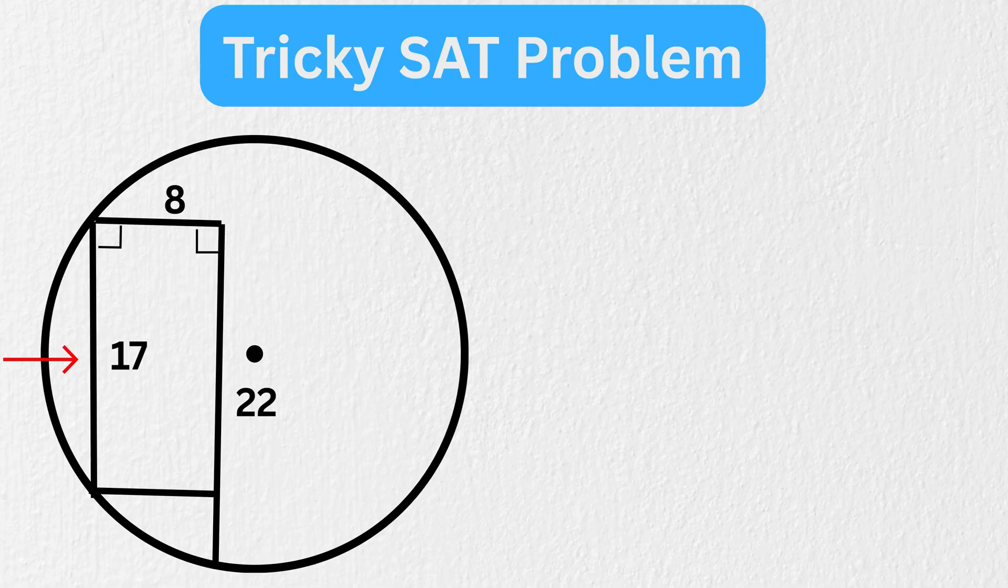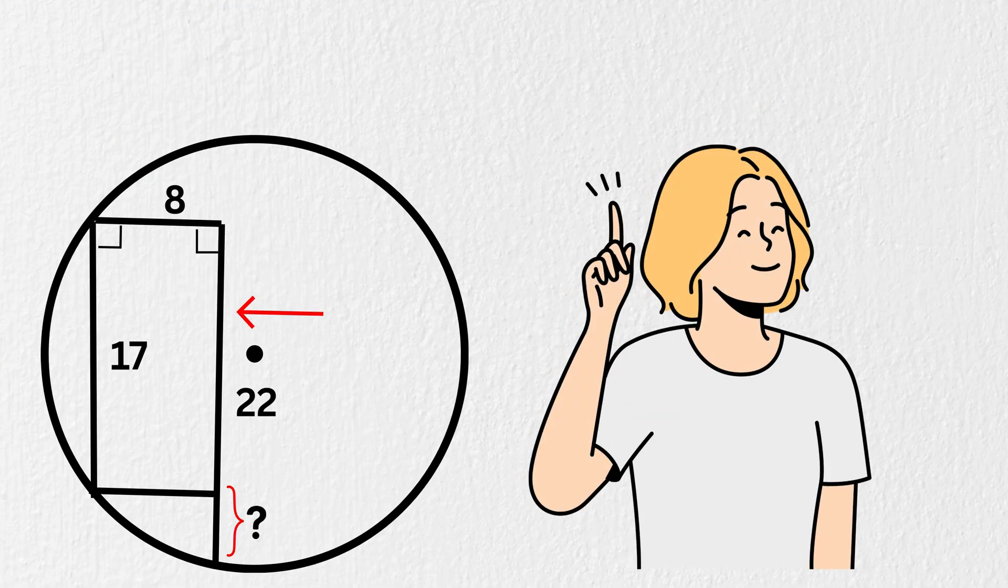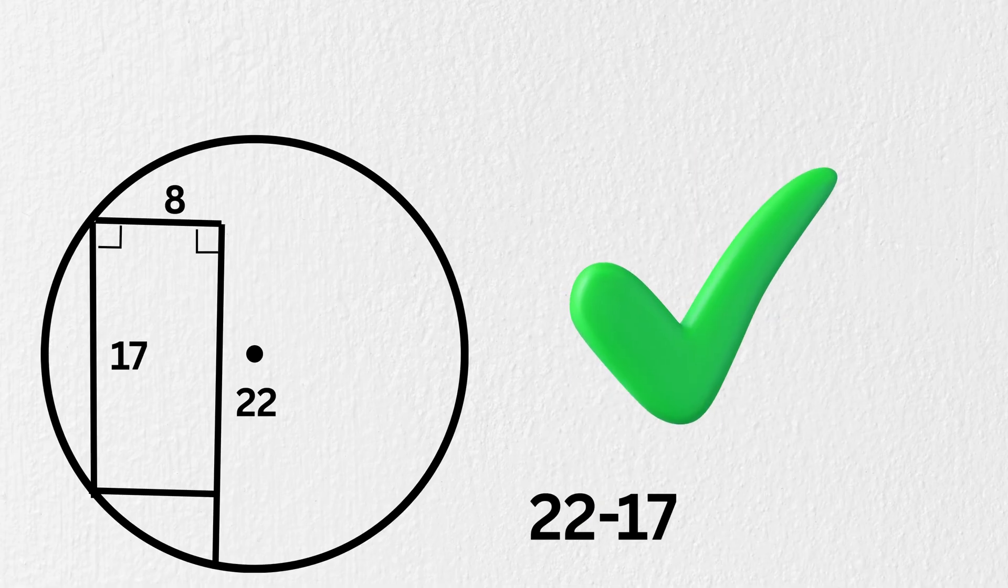Now this is 17, and this is 22 units. So what will be the length of this piece? Yes, you are right. It will be 22 minus 17, or 5 units, right?